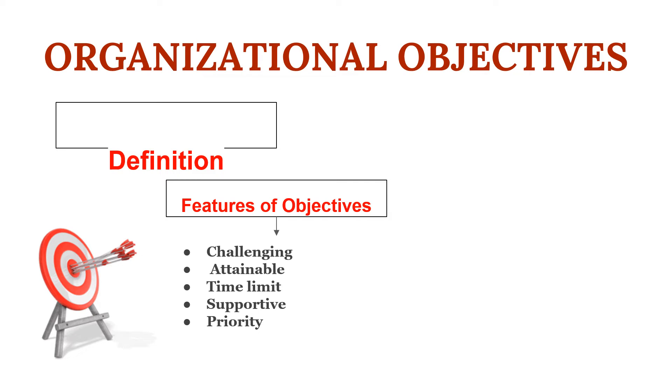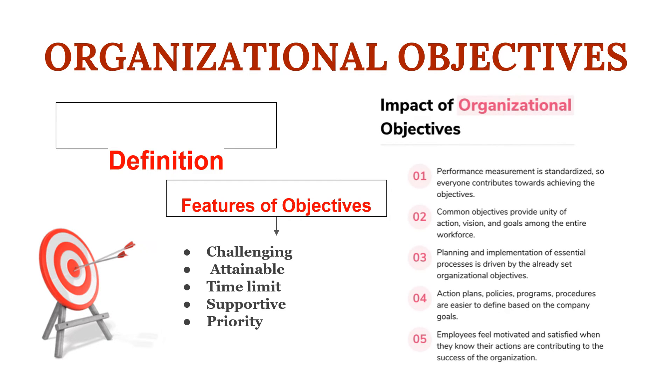The next feature is priority. At any point in time, an organization has multiple goals, and therefore goals should be arranged in an order of priority.